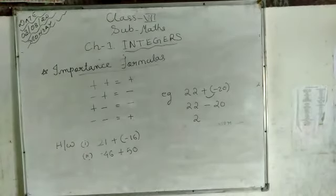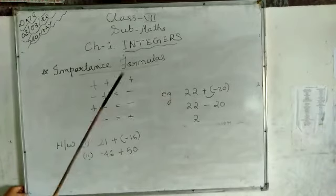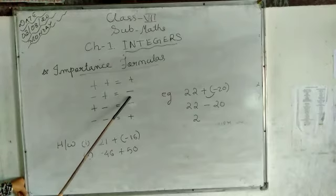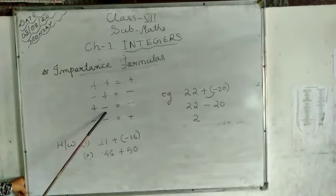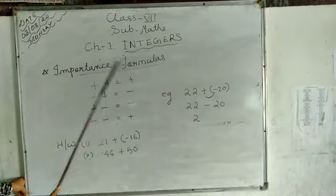Before doing this exercise, we have some important formulas. Plus and plus will become plus. Minus and plus means negative and positive will become negative. Plus and minus means positive and negative will become negative. Two negatives will become positive. If the signs are same, like plus and plus or negative and negative, it will become plus.